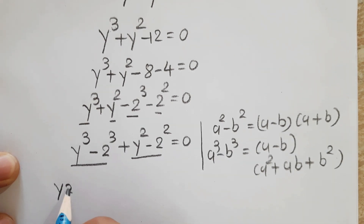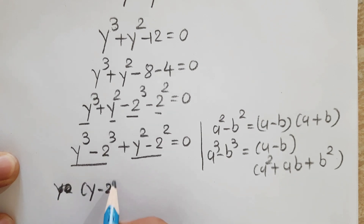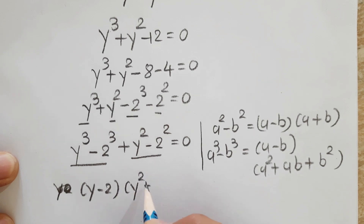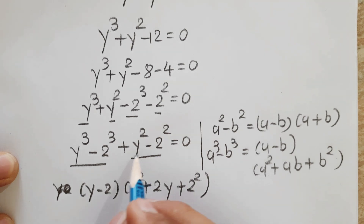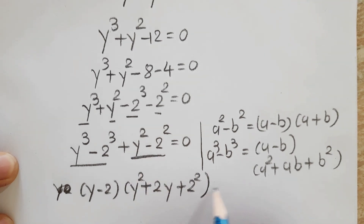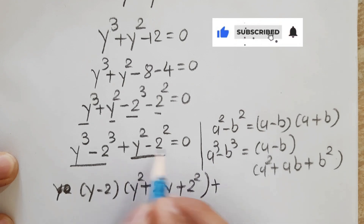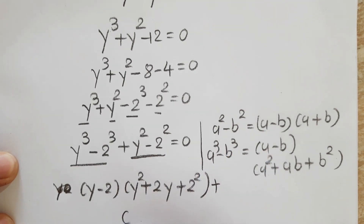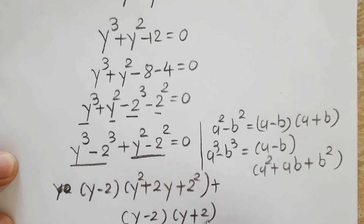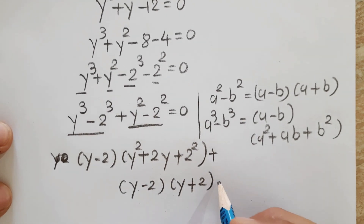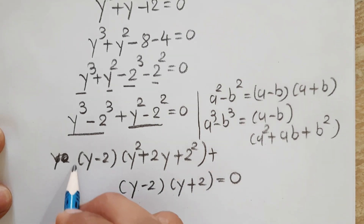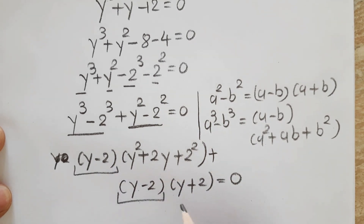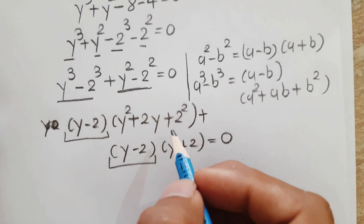Applying the cube formula first: y³ - 2³ = (y - 2)(y² + 2y + 2²). Then applying the square formula: y² - 2² = (y - 2)(y + 2). So the equation becomes (y - 2)(y² + 2y + 4) + (y - 2)(y + 2) = 0. Now we can take (y - 2) as a common factor.